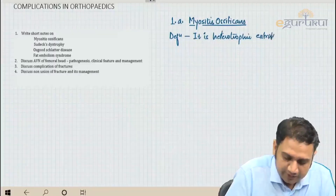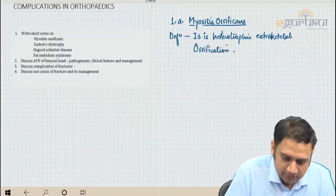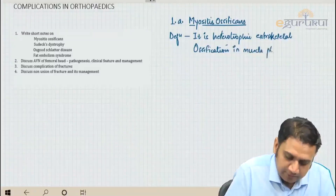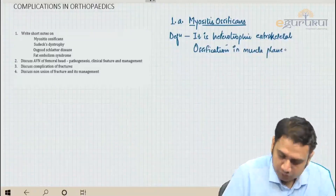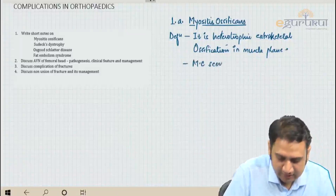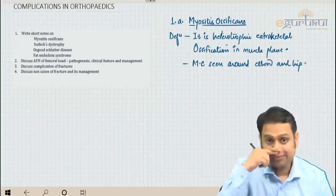It is heterotrophic extraskeletal ossification in the muscle plane. Most commonly, it is seen around the elbow, and the second joint where it is commonly seen is the hip.